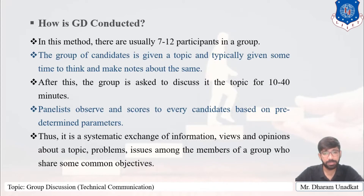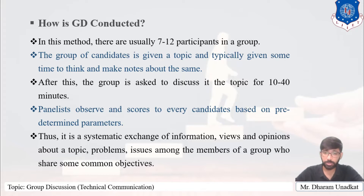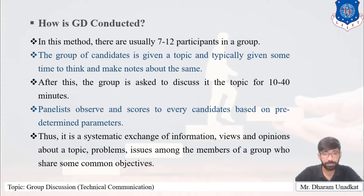How is GD conducted? In this method, there are usually 7 to 12 participants in a group. This group of candidates is given a topic or a situation which could be either factual, abstract, or case-based, and is typically given some time to think and make notes. Sometimes more time is given, especially in higher organizations.